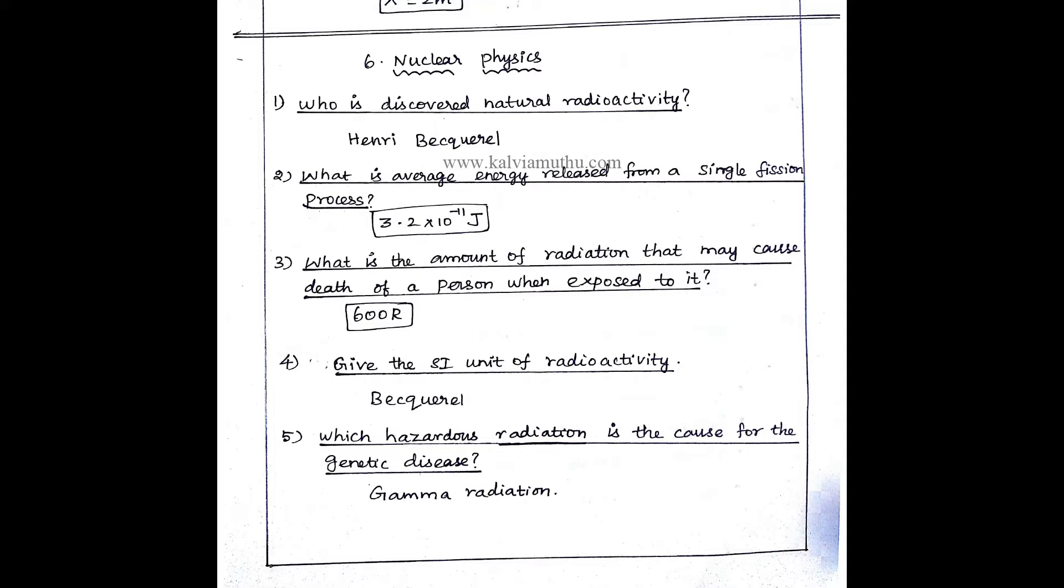Next, what is average energy released from a single fusion process? So, 3.2 × 10^-11 J. Unit is very important.